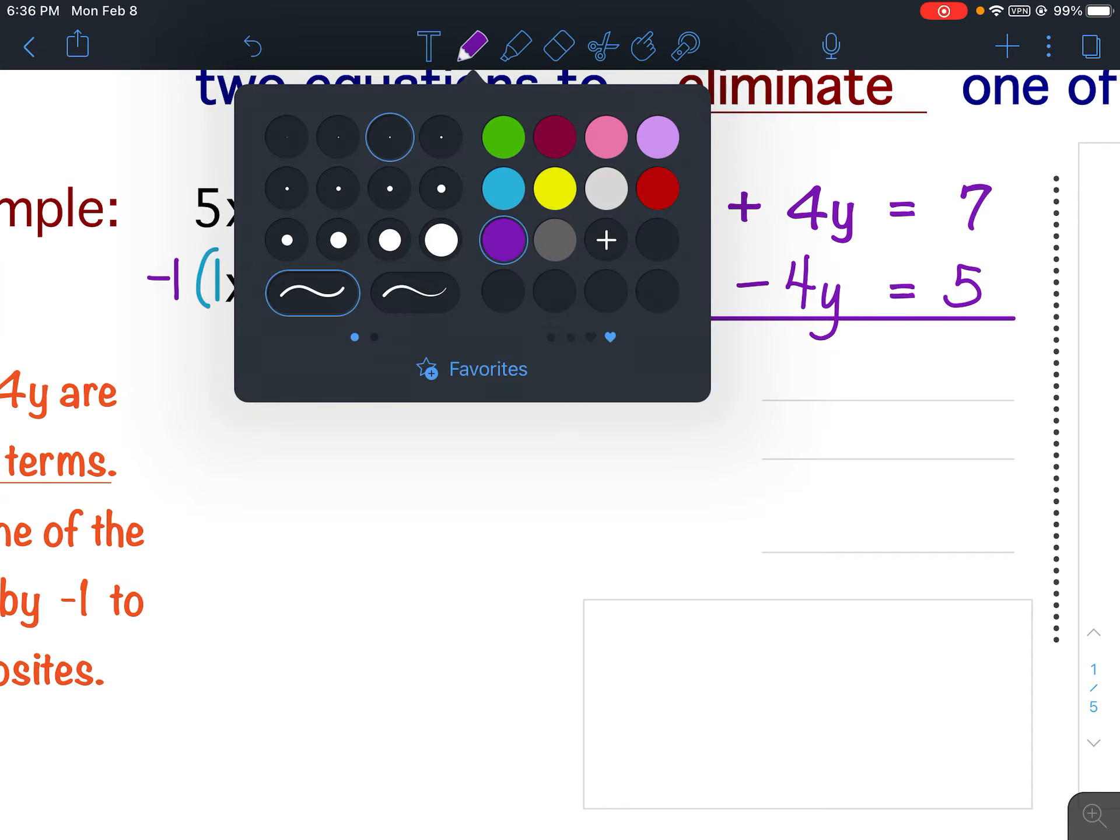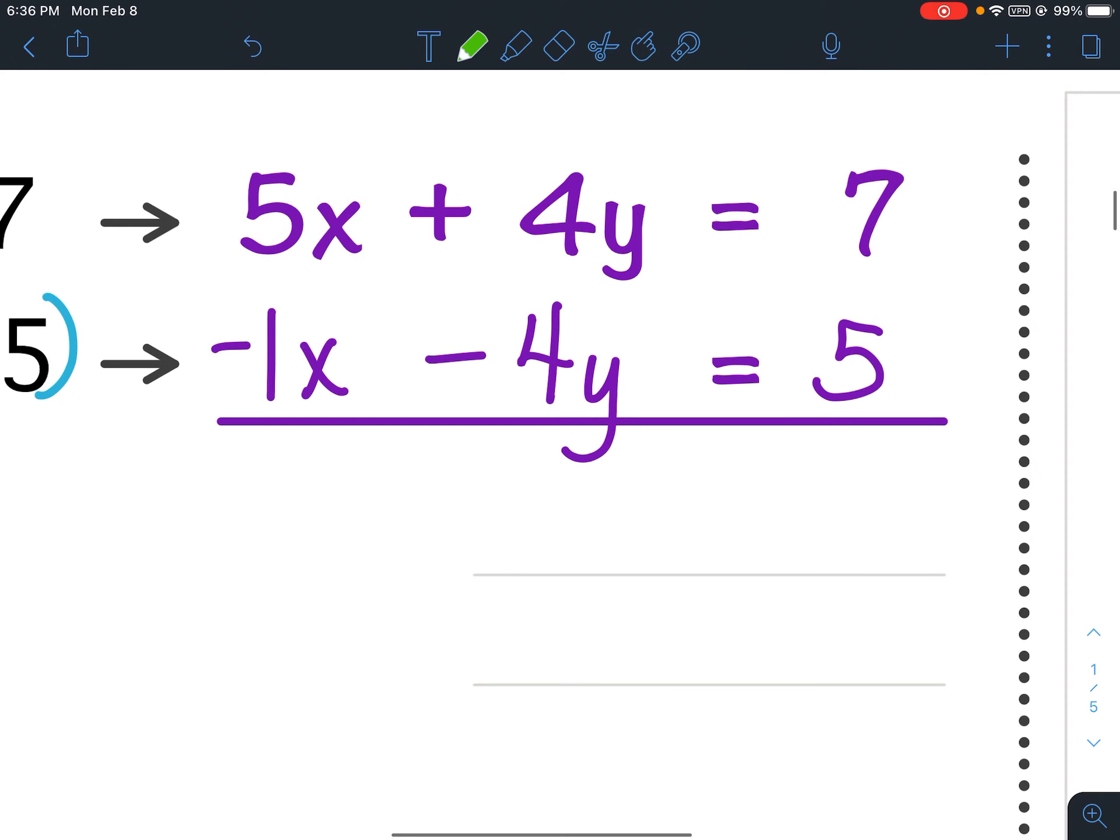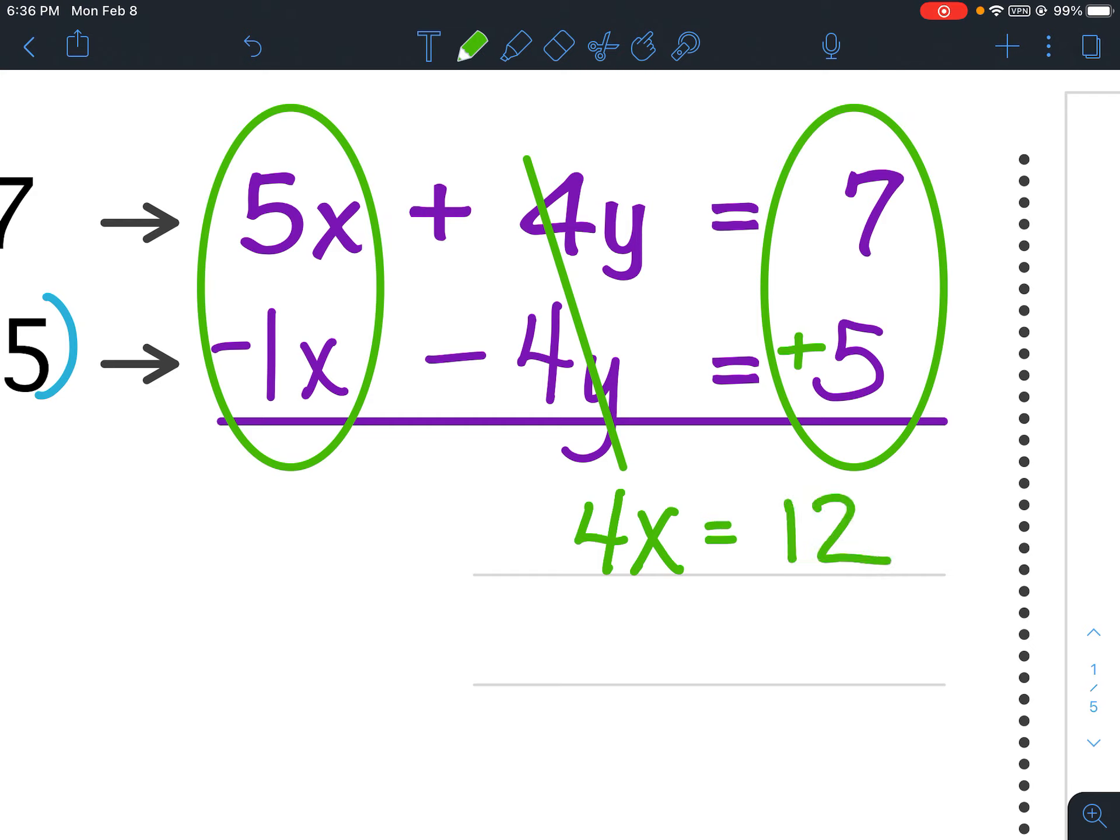Now I have opposites. I've got positive 4y and negative 4y. So they will cancel, eliminating the y term. Since the y term is eliminated, I now work vertically. I'm going to take this 5x minus 1x, and 5 minus 1 would give me 4x. Then I'm going to combine my constant terms. Because this is a positive 5, I'm going to add. I'm going to keep my equal signs lined up. 7 plus 5 would be 12. Now once you've eliminated a variable term and combined what's left, I added the two equations. 5x minus 1x would give me 4x. 7 plus 5 is 12.